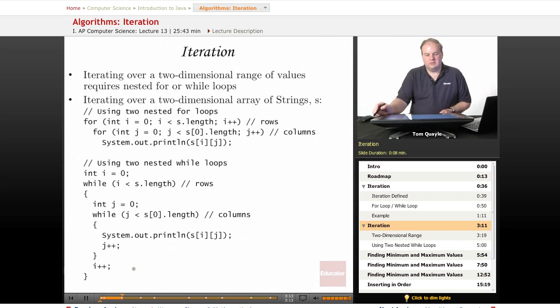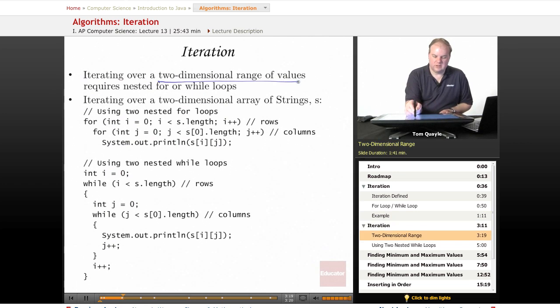Those were examples of how to iterate over a one-dimensional set of values. If we have a two-dimensional range of values, then typically we use nested for loops or nested while loops.